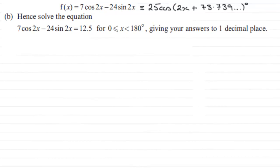Hi. Now in this question, what we've got to do is solve this equation: 7 cos 2x minus 24 sine 2x equals 12.5 for x greater than or equal to zero but less than 180 degrees, giving our answers to 1 decimal place.